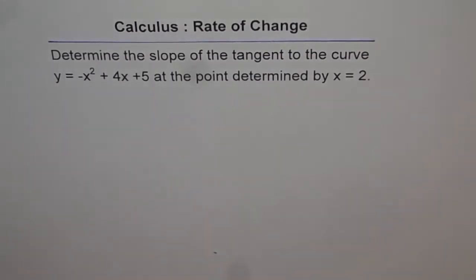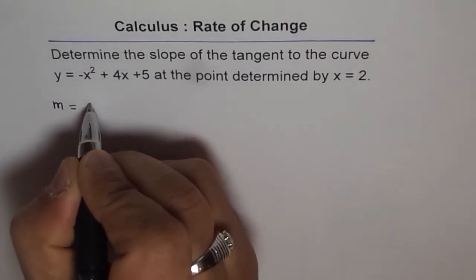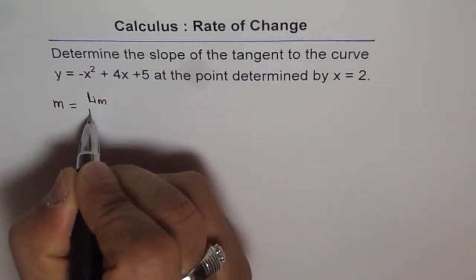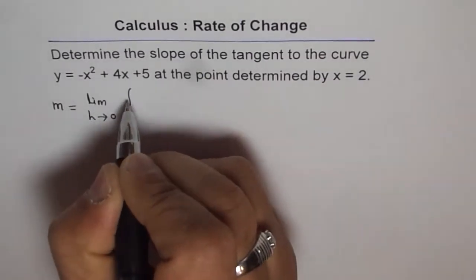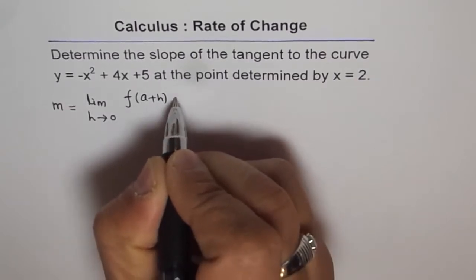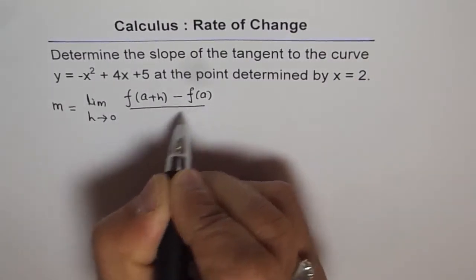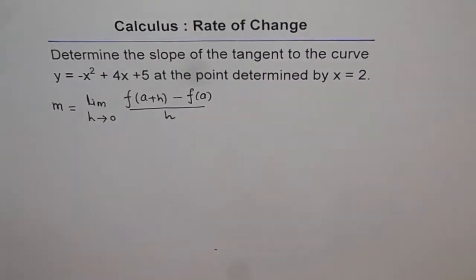We will go with the definition of tangent, which is that at any point you can find the tangent to a curve using the difference quotient equation: m = lim(h→0) [f(a+h) - f(a)]/h.